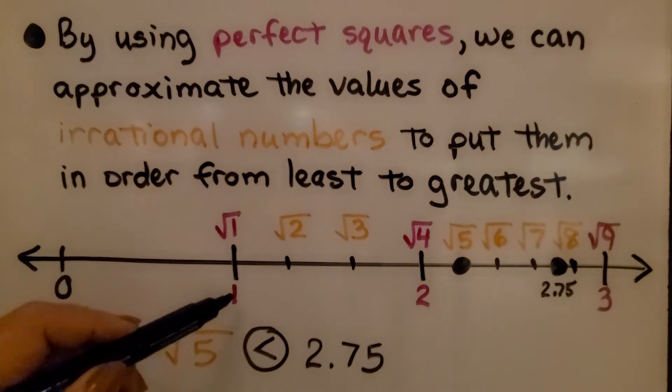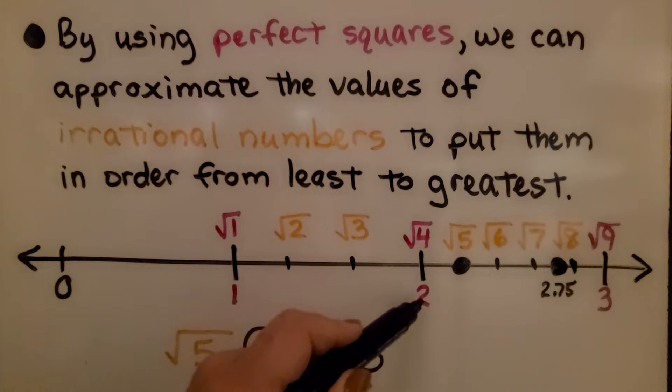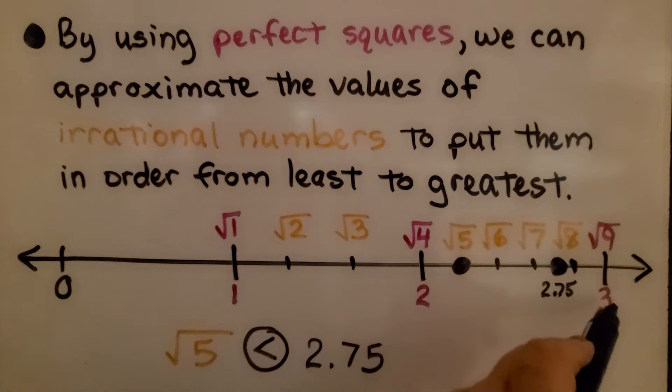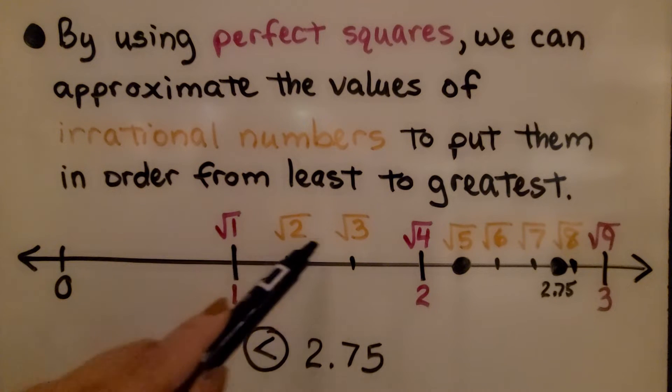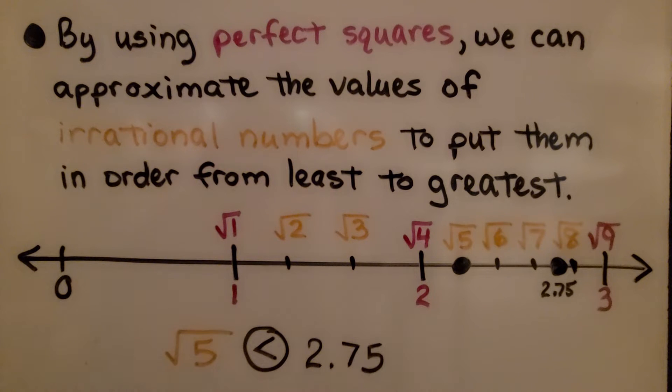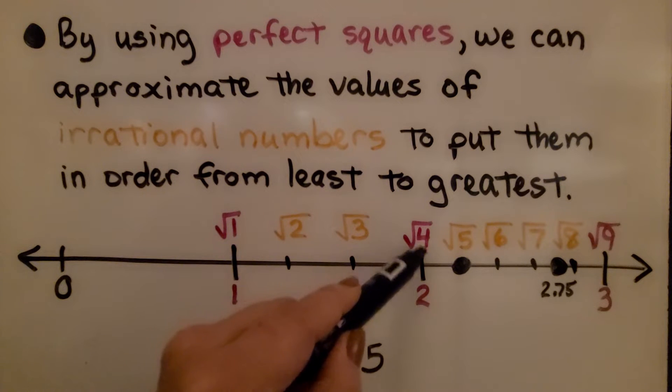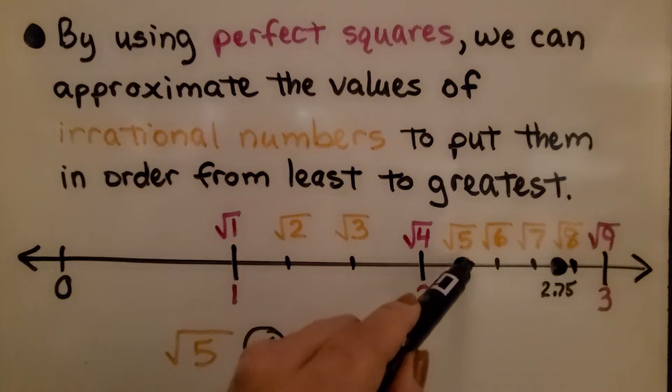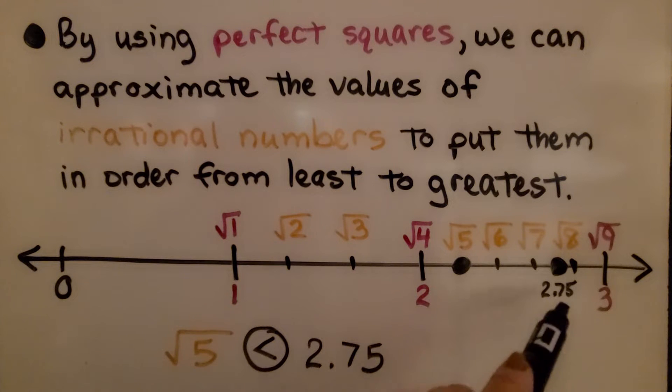The square root of 1 is 1, the square root of 4 is 2, and the square root of 9 is 3. Those are perfect squares. We can find the approximate values for the square roots between them by using these perfect squares. Square root of 5, well, that's more than square root of 4. That would be about right here. And 2.75 would be closer to 3. We know that the square root of 5 is less than 2.75.